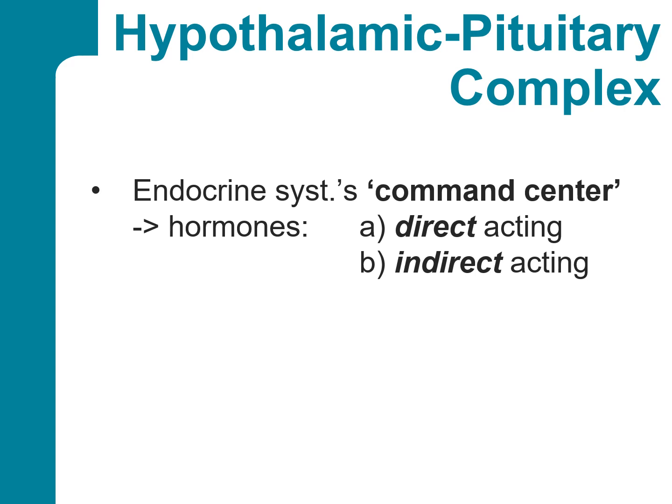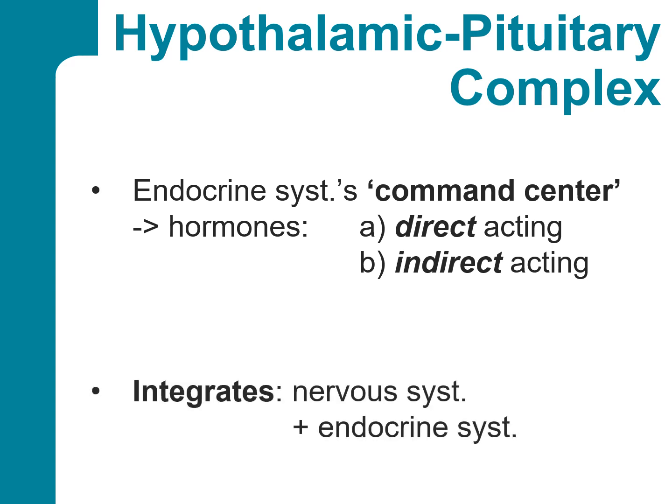This structure secretes several hormones that have either a direct effect on target tissues or, alternatively, may act by regulating the synthesis and secretion of hormones from other glands. In addition, this hypothalamic-pituitary complex coordinates messages between the nervous and endocrine systems. Stimuli within the nervous system often pass through this complex to be translated into hormones, which then trigger responses within the endocrine system.